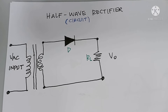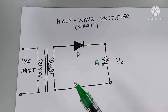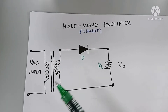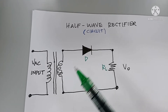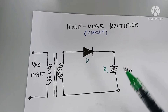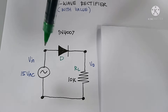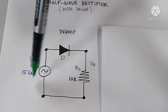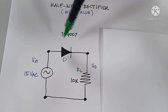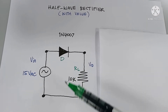Now let me show you the half-wave rectifier circuit. We have three components: the first is the transformer or power source, the second is a single diode, and the third is the load resistor. For the power source I supply 15 volts AC, for the diode I am using a 1N4007, and for the load resistor I am using a 10kΩ.